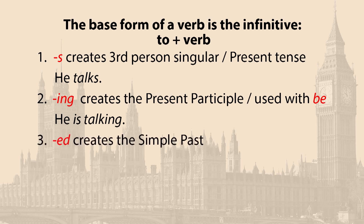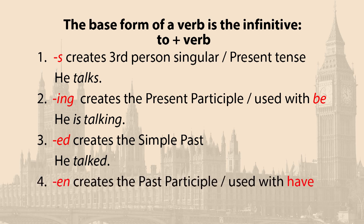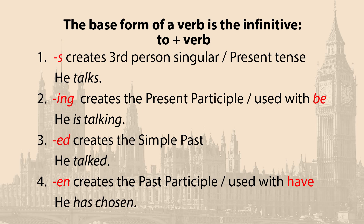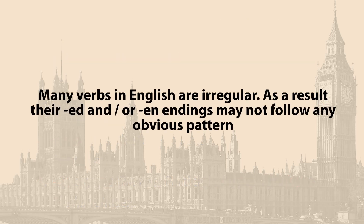The suffix -ed creates the simple past — for example, 'he talked.' The suffix -en creates the past participle used with 'have' — for example, 'he has chosen.' Many verbs in English are irregular; as a result, their -ed and/or -en endings may not follow any obvious pattern.